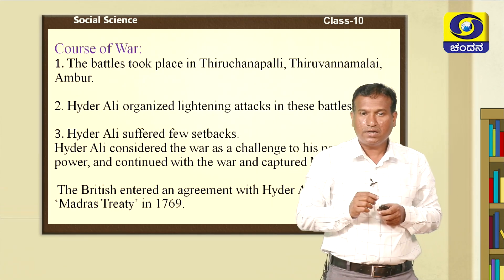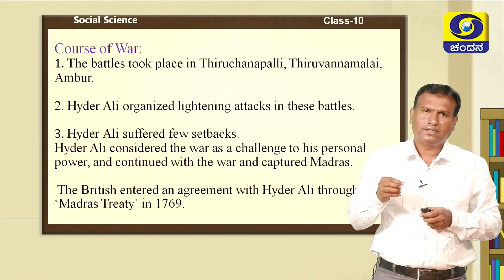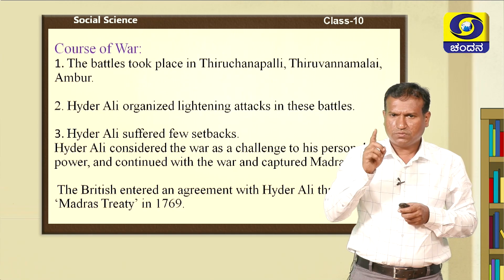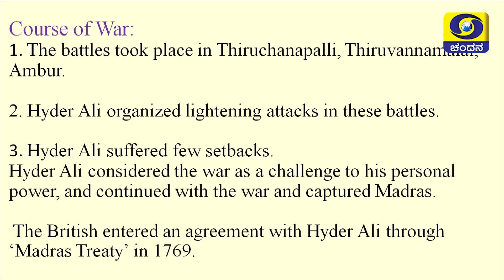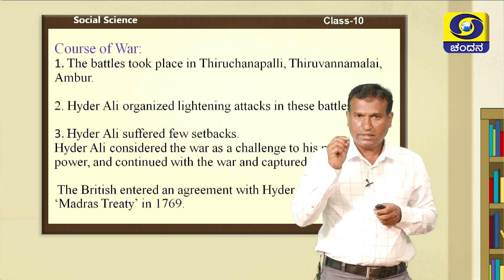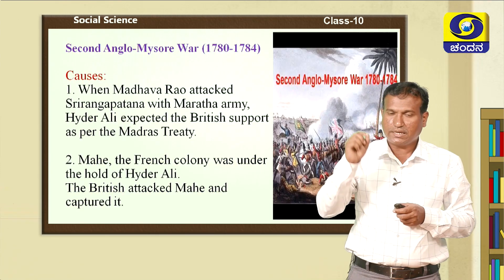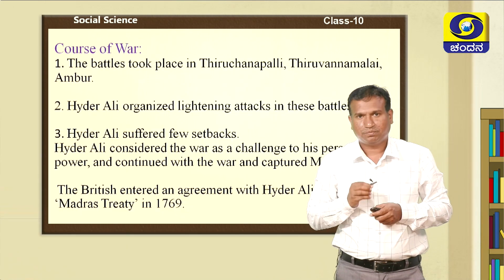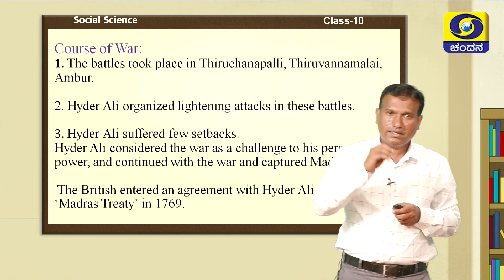Haidrali organized lightning attacks in these battles, though he also faced setbacks in some battlefields. He considered the war very challenging for his personal power and continued fighting. Not only did he continue the war, but he attempted to capture Madras. His attempt was successful — in 1769, Haidrali captured Madras, and the English came forward for a peace treaty. That was in the year 1769, and the Treaty of Madras was signed between Haidrali and the English.